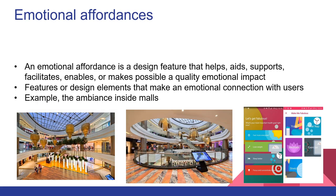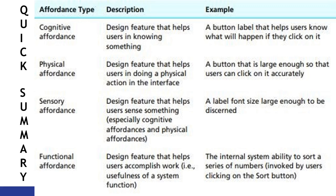The last affordance, which we are all familiar with, is Emotional Affordance. It helps users get a quality emotional impact such as joy, happiness, and satisfaction. The features or design aspects create an emotional connection with the user — like the ambiance we see in a mall which makes us excited and gives us joy, especially during an event or festival. The summary of affordances shows that emotional affordance is considered across all kinds of affordance.